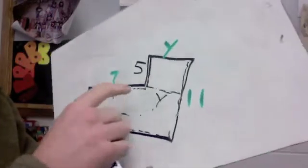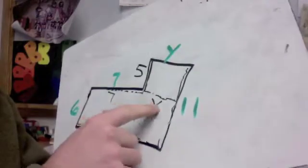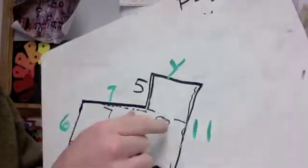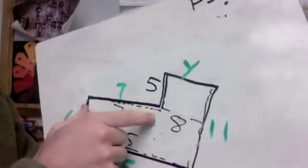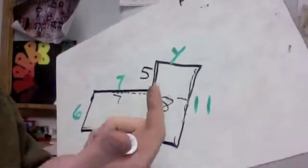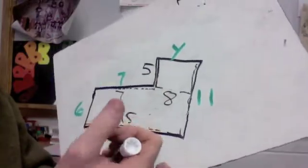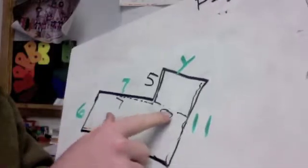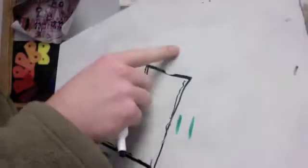But 7 plus what is going to get you 15? This is going to be 8. 7 plus 8 is 15. I know it doesn't look like it because it looks smaller than this, but it's just the way the picture is drawn. We've got to go by the numbers. 7 plus 8 is the 15 that we're looking for. So for the y, I can change that to 8.